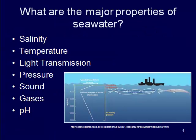Some of the properties of seawater: what can we measure in the ocean starting at the surface and going deeper? We can measure salinity, temperature, light transmission, pressure, sound, the amount of gases, and the pH.